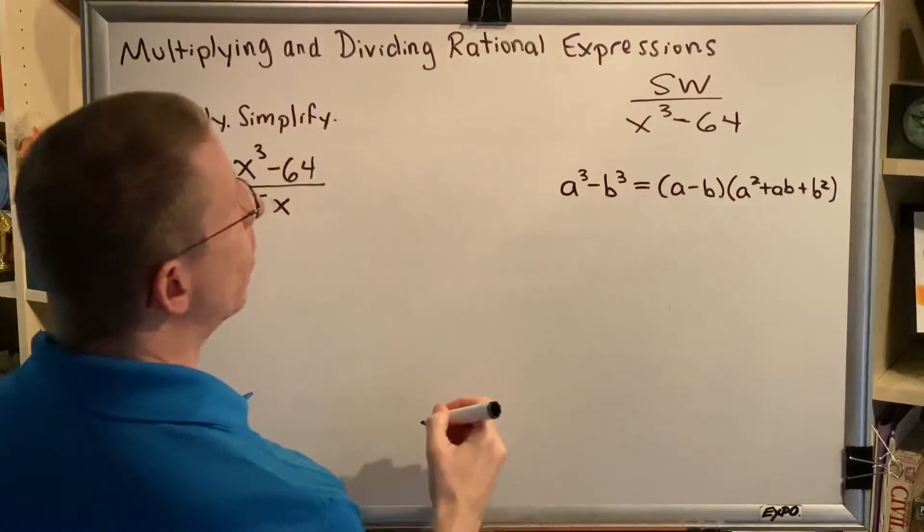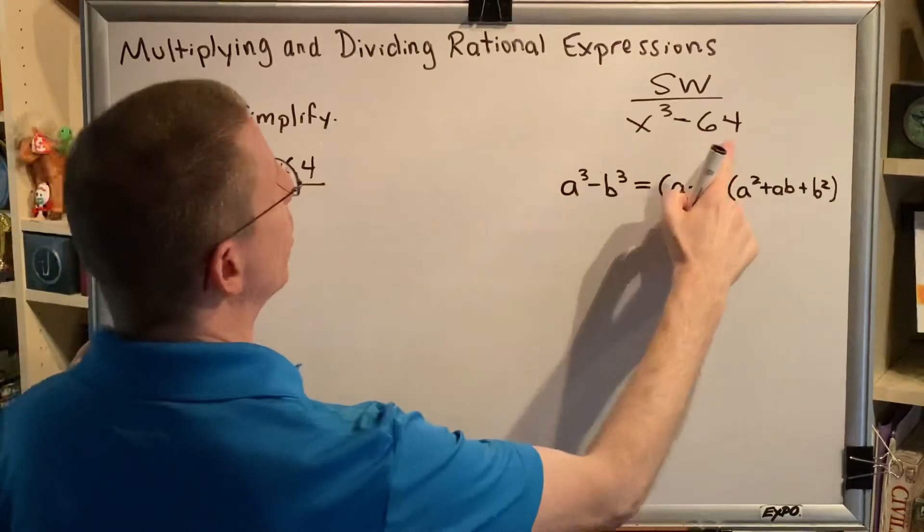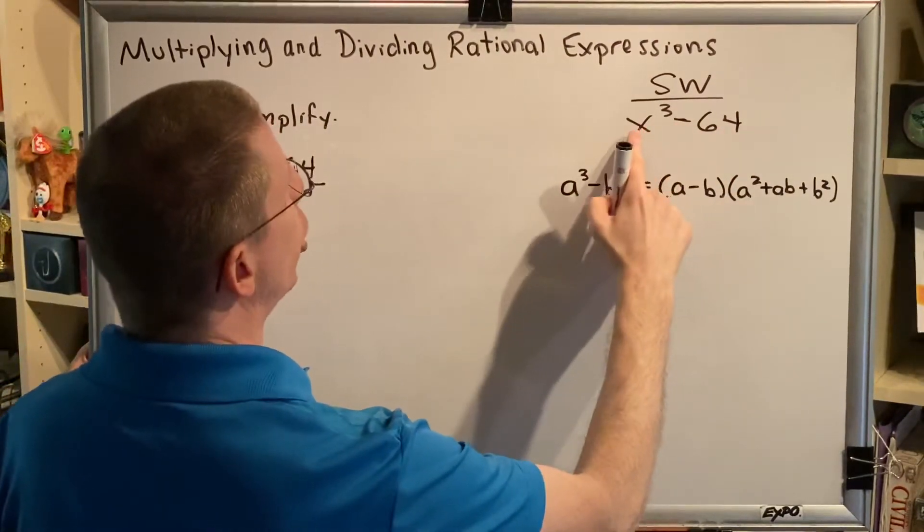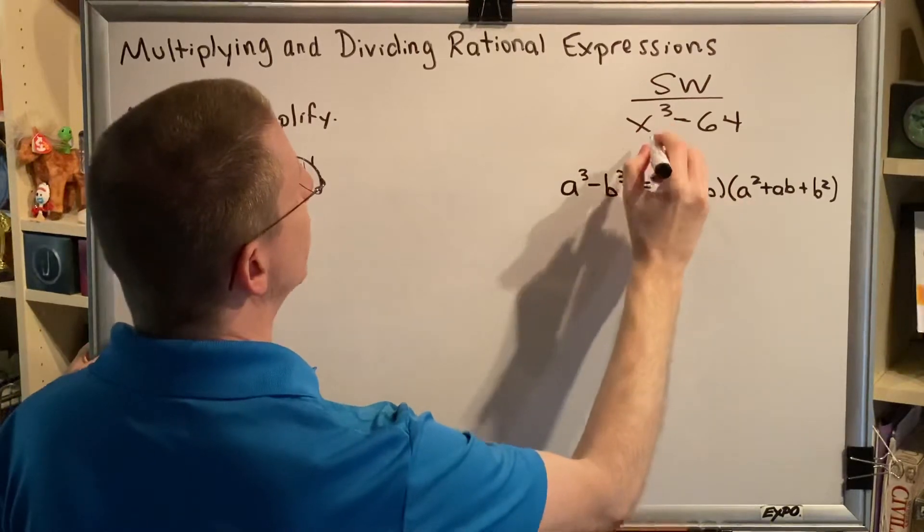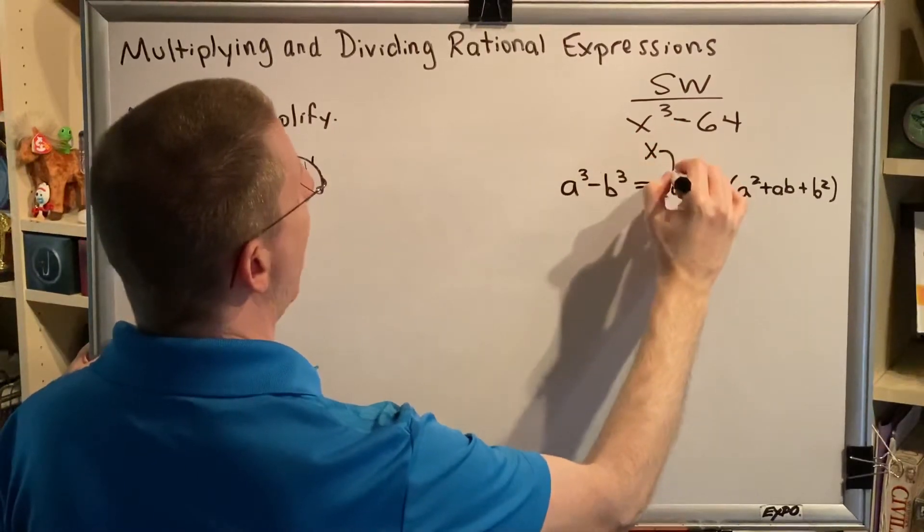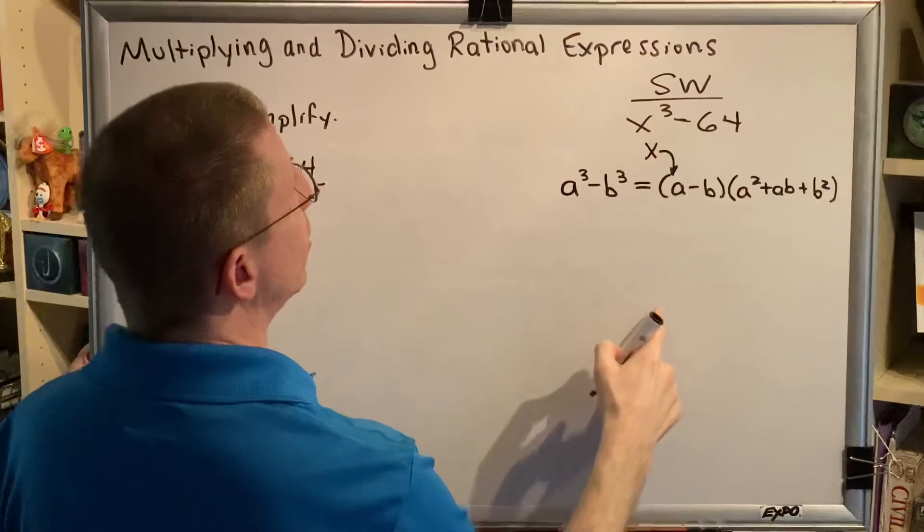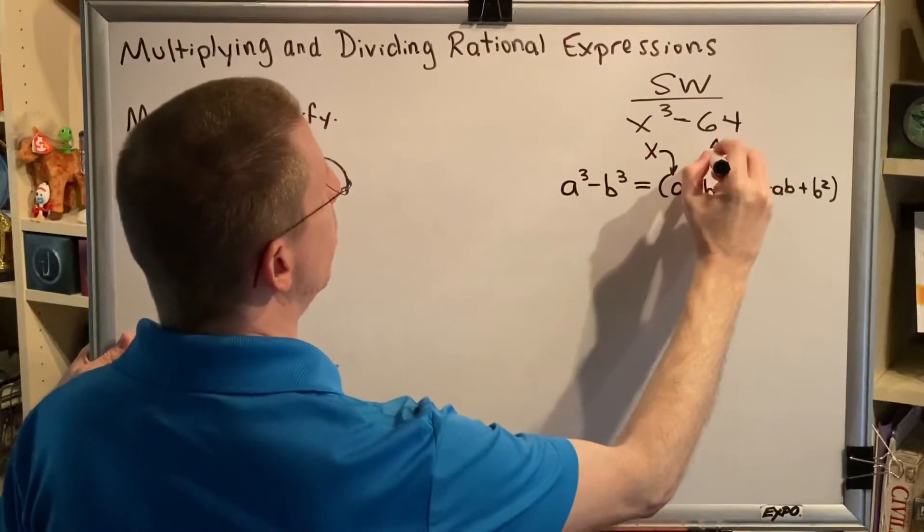And to find out what a and b are, we just have to take the cube root of each of these things. The cube root of x³ is x. So this is the a. The cube root of 64 is 4. So this is the b.